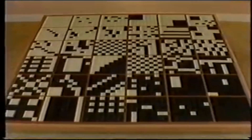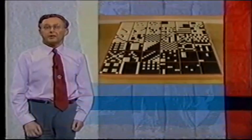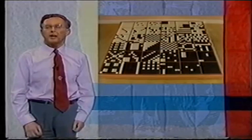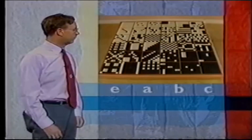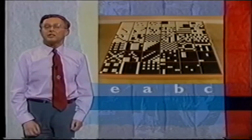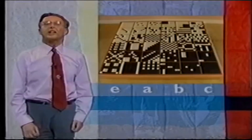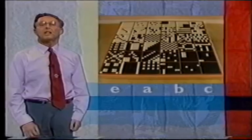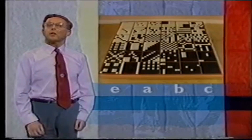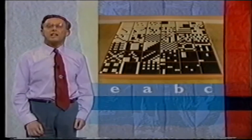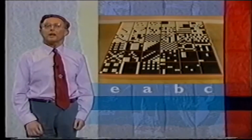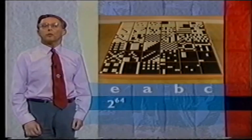We're now in a position to solve the three problems. First, the 8×8 chessboards — how many different patterns, up to rotation, can you make by coloring the squares black or white? The group acting on the set of colorings is again the group of rotations of the square, which has four elements. We need to find the fixed set of each of these elements. First, the identity — that's easy, it fixes all the possible colorings. There are 64 squares on the board, each with a choice of two colors, giving a total of 2 to the 64 possible colorings.